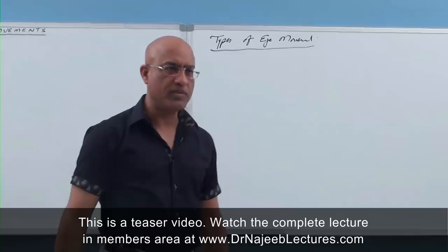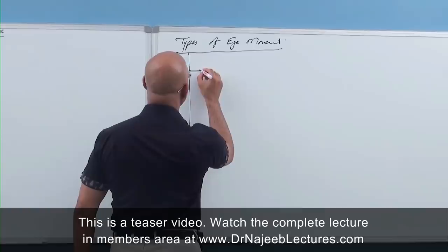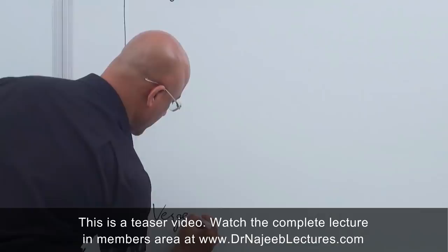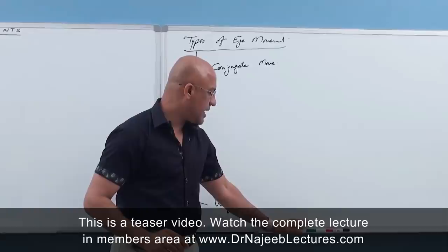There are many ways to classify eye movements. One simple way is to classify them into two types: number one is conjugate movements, and number two is vergence movements.